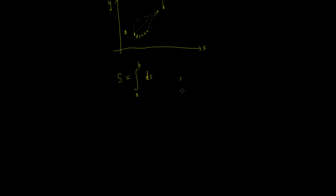Now we know from the previous lecture that in order to find ds we use Pythagoras. We had ds² = dx² + dy², and from that we're able to deduce that the value of the function we're looking for is going to be written as √(1 + y'²). If you go back to a couple of videos ago you'll see the derivation of this. Now that is the function that gives us this value of ds.